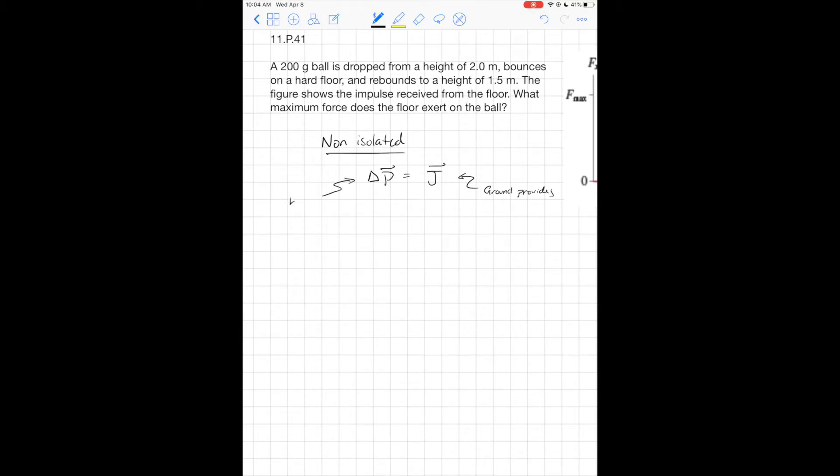If we think about the bouncy ball, I have m times vf minus m times vi, and I need to think about the directional aspects. The masses are constant, and then I have this integral from t1 to t2 of F(t) dt.